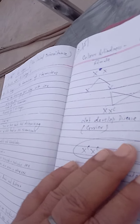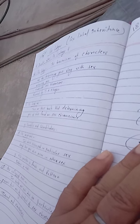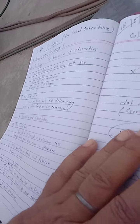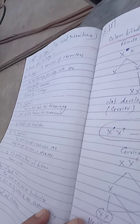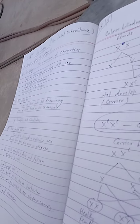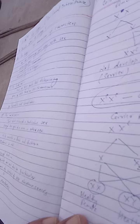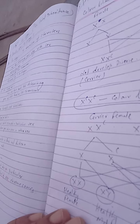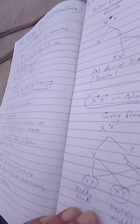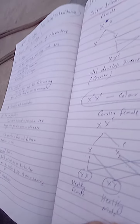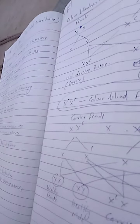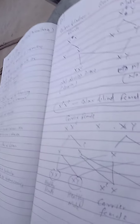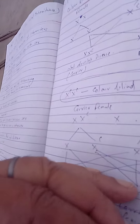In the F1 generation from a cross between a normal female and a color blind male, we find carrier females but normal males. When we cross a carrier female with a normal male, we find healthy female and carrier female in the ratio of 1:1, and healthy male and color blind male in the ratio of 1:1.